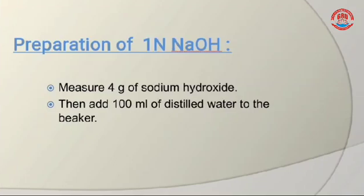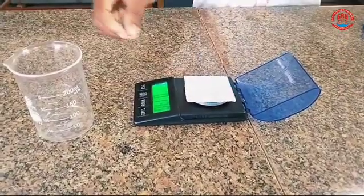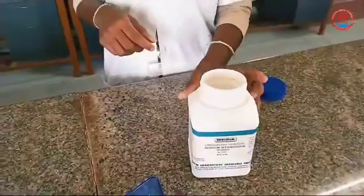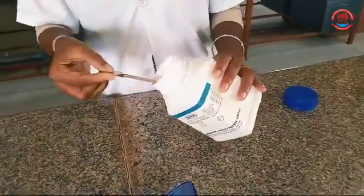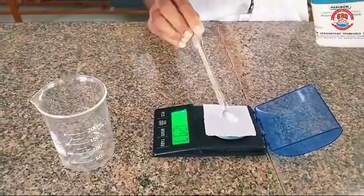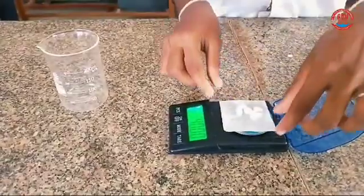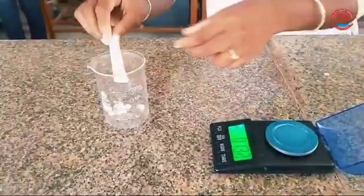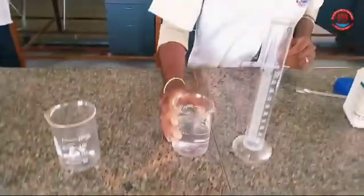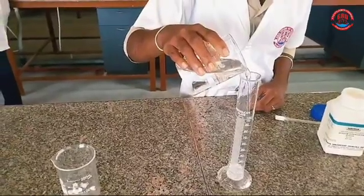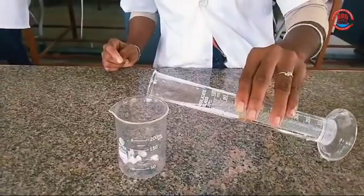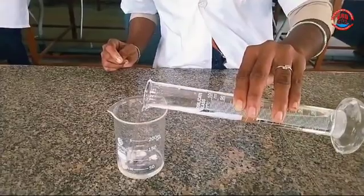Preparation of 1 normality sodium hydroxide: Measure 4 grams of sodium hydroxide, then add 100 ml of distilled water to the beaker.